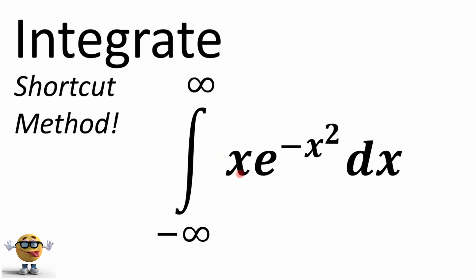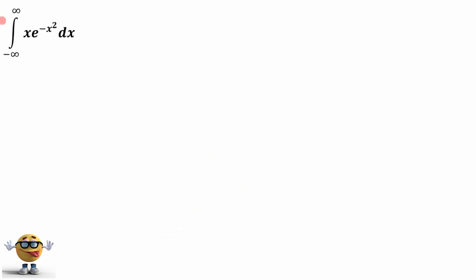All right y'all, we're going to integrate this integral right here: x times e to the negative x squared from negative infinity to infinity. It's going to be awesome. And just note, I have many modifications of this integral if you want to check those out as well.